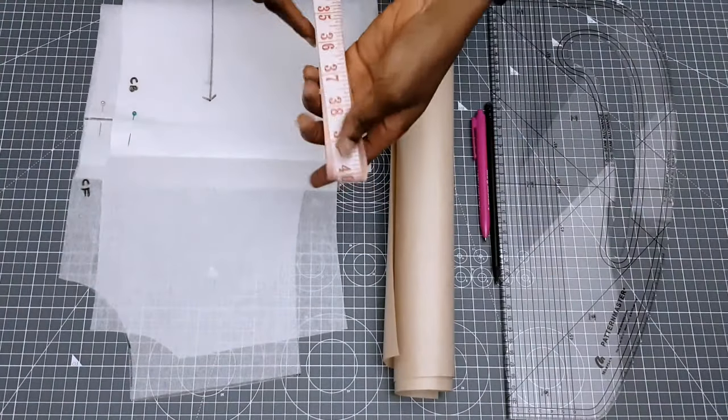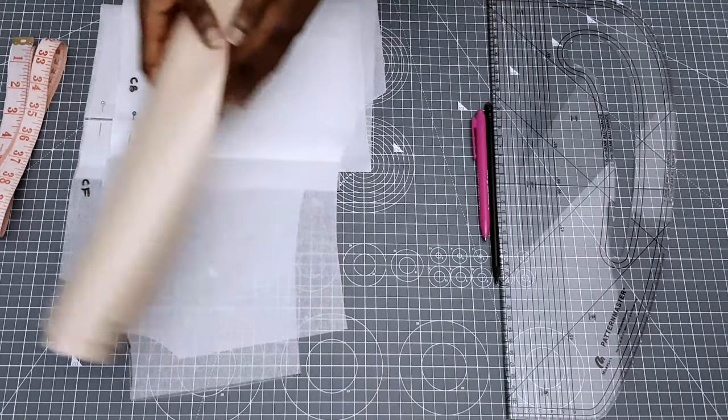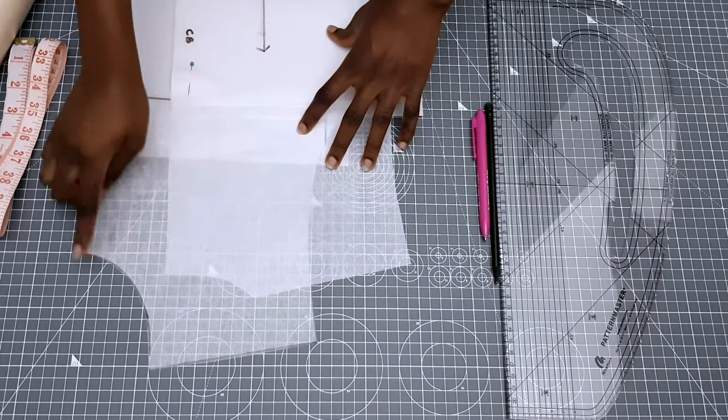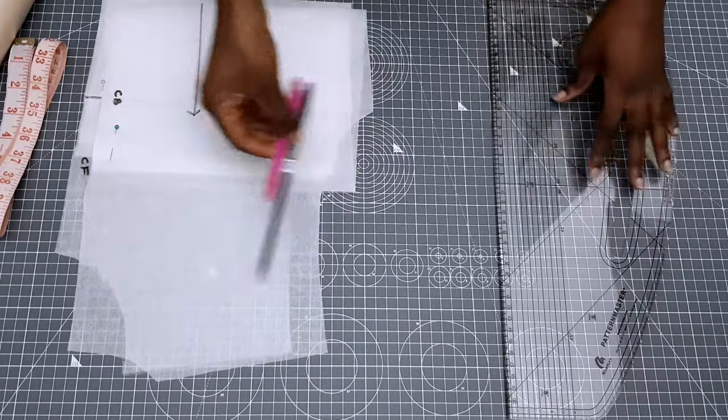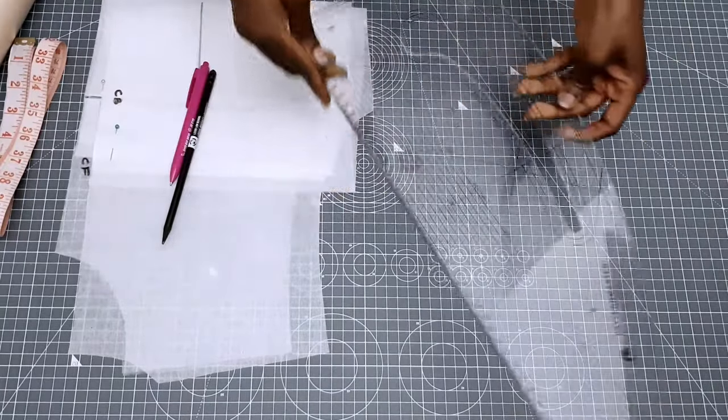So to begin we're going to be needing the following tools: my tape measure, some pattern paper, my basic front and back bodice, some pens and my trusted pattern master which I'm going to be using for my curves and my straight lines.